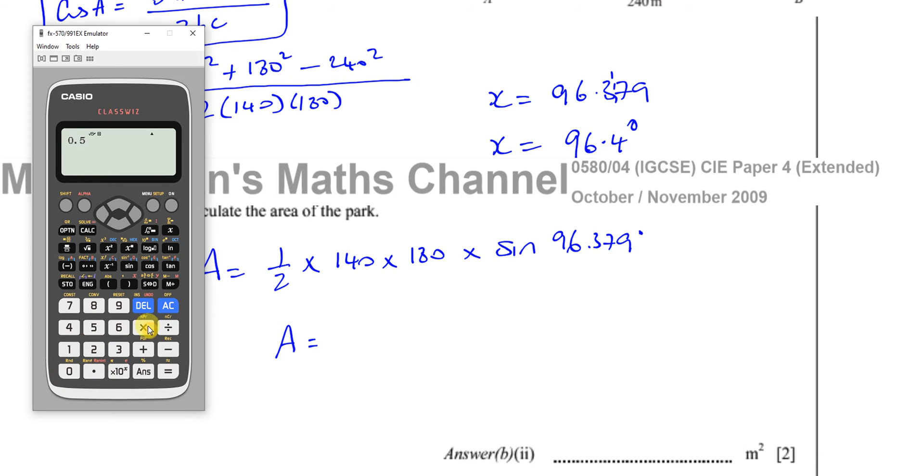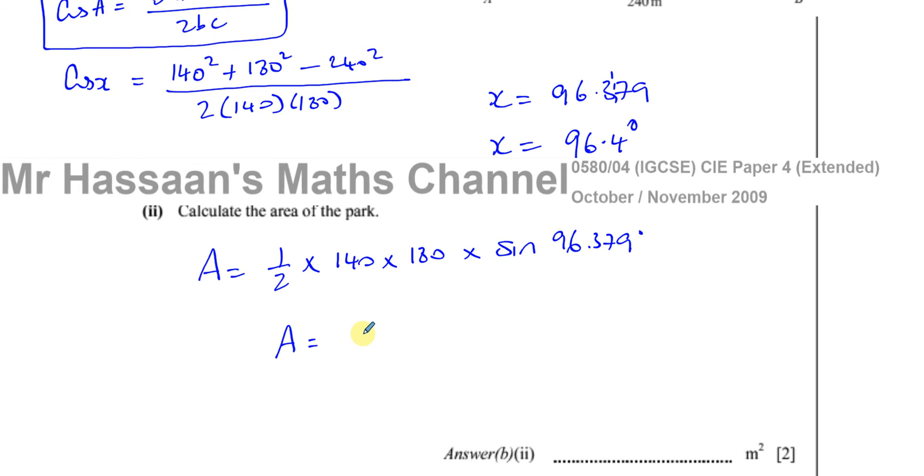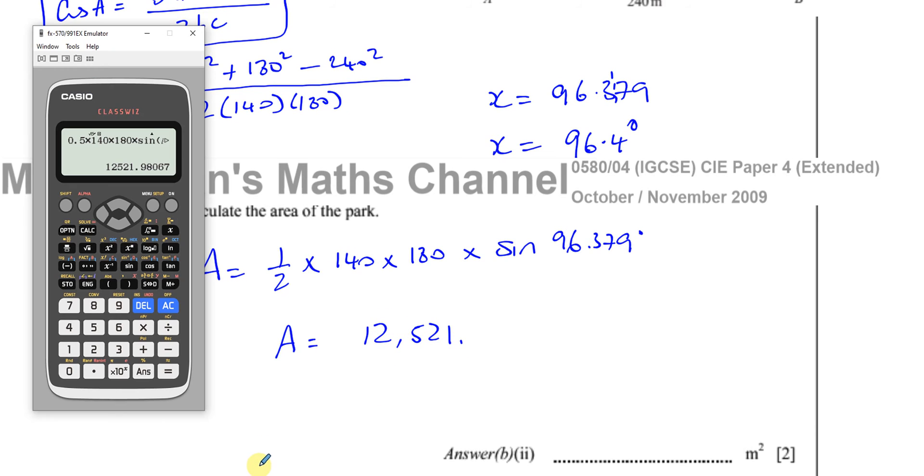Multiplied by the sine of the answer. That's like the sine of the last thing that was in the calculator after I pressed the equal sign, which was the angle 97.379 in its most accurate form, that means. So if I press equals now, that will give me the area, which is 12,521.98. So 12,521.980.